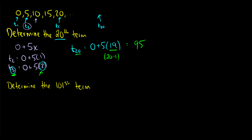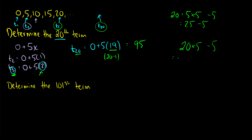In fact, looking at it another way: the fifth term, t5, which is 20, is really just 5 times 5 minus 5, which is 25 minus 5. So therefore the 20th term is 20 times 5 minus 5, which is 100 minus 5, which is just 95. We get this answer regardless of the approach we use.